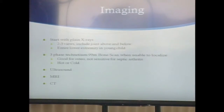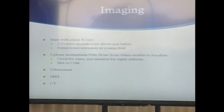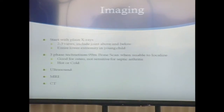For imaging, always start with plain x-rays — get two to three views. Sometimes an oblique is helpful, such as in a toddler fracture of the tibia. Make sure to look at the joint above and below. For young children aged one to two or younger, you can get x-rays of the whole limb on one shot. If still unsure, consider a bone scan — good sensitivity and specificity for osteomyelitis, but not very sensitive for septic arthritis. Also consider ultrasound, MRI, or CT.